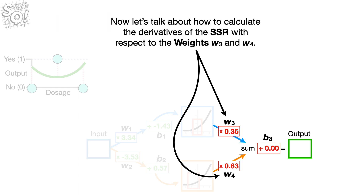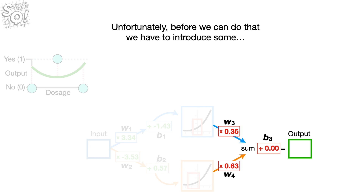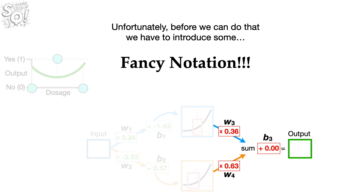Now let's talk about how to calculate the derivatives of the sum of the squared residuals with respect to the weights W sub 3 and W sub 4. Unfortunately, before we can do that, we have to introduce some fancy notation.